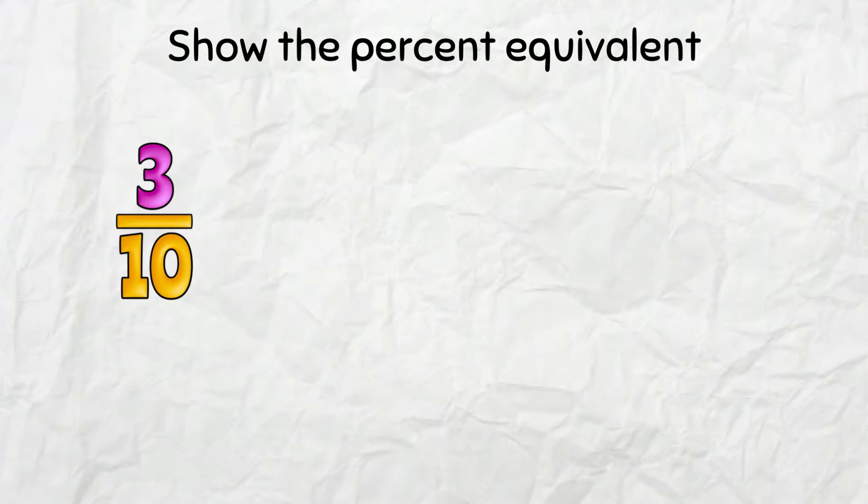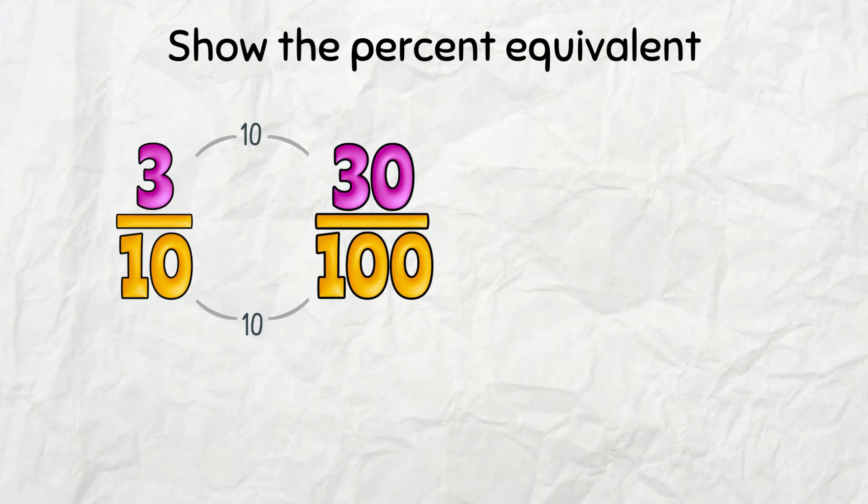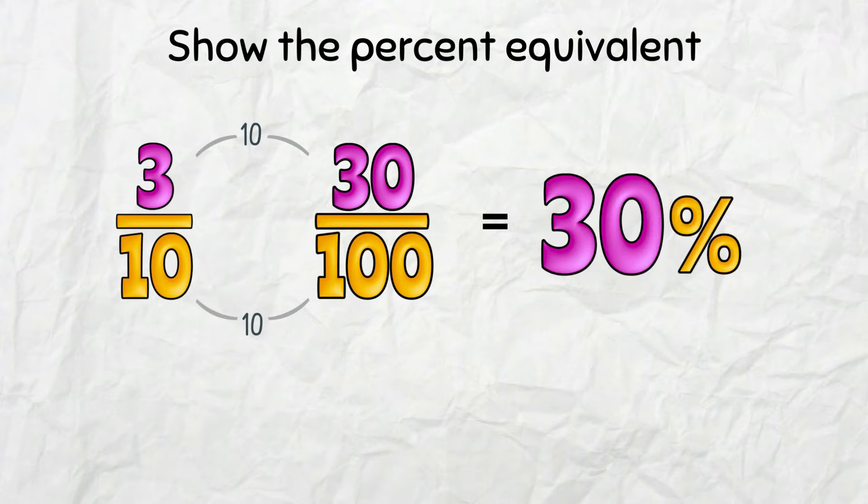I have to show this as a percent. If I use a factor of 10, I get a denominator of 100 and a numerator of 30. 30 parts per 100 equals 30%!